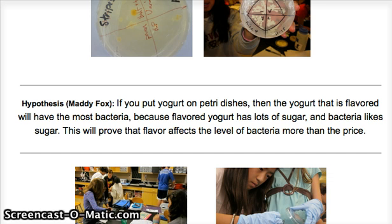This would be because with price, there's no reason for the bacteria levels to change — it's just that the bacteria is cheaper for that company. But with flavor, the ingredients change. For example, peach has peach chunks in it, and vanilla has no peach chunks in it.